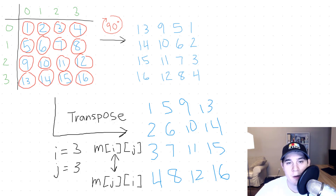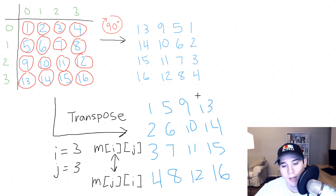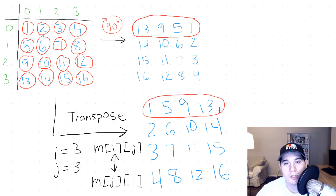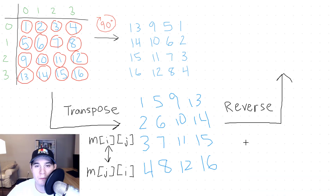Now for the second step: we need to reverse all of the columns for each of our rows. If you look at the first row of our transposed matrix — 1, 5, 9, 13 — and compare it to the first row in our goal state — 13, 9, 5, 1 — you can see it's just the reverse. To complete this next step, we just need to reverse all of the columns. To do that, we're going to need three different variables.